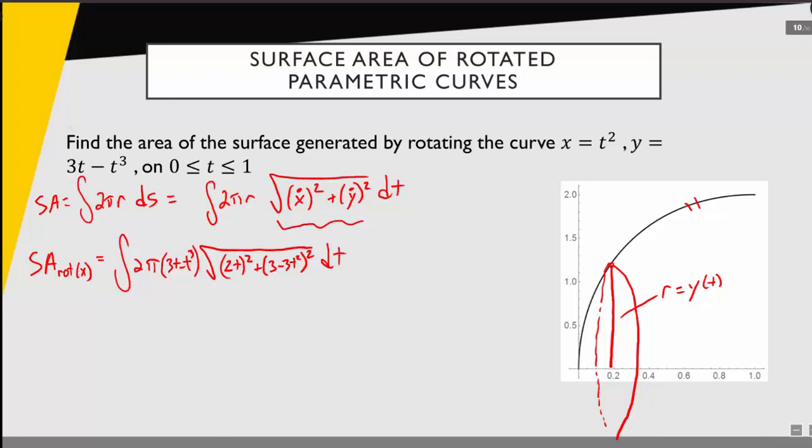And then we're integrating this over our range of t values from 0 to 1, and so that should be the integral that represents the surface area of us rotating this curve around the x-axis.